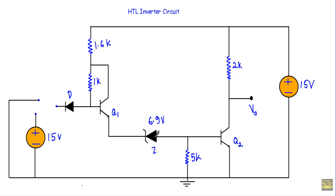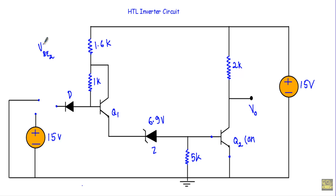Instead of diodes D3 and D4, we will use a Zener diode with breakdown voltage 6.9 volt. An HTL logic circuit provides high noise immunity. To turn on transistor Q2, I first have to apply a base-to-emitter voltage — I denote that voltage VBE2 — and this voltage must be greater than 0.7 volt.